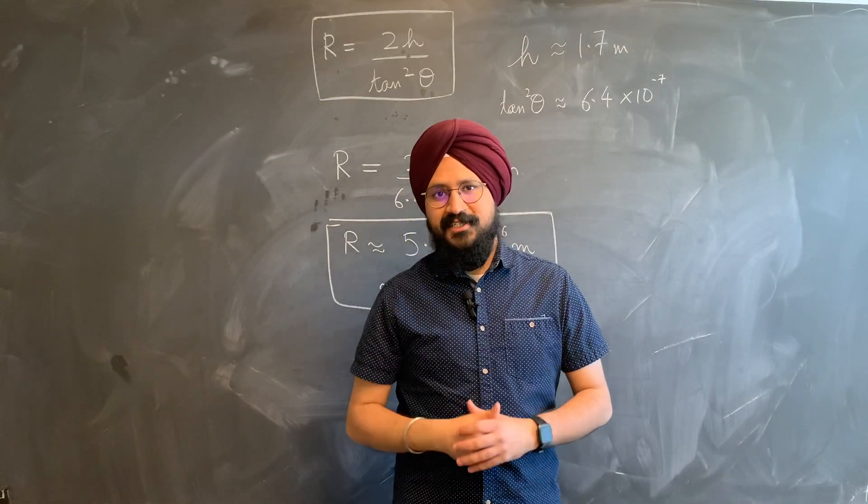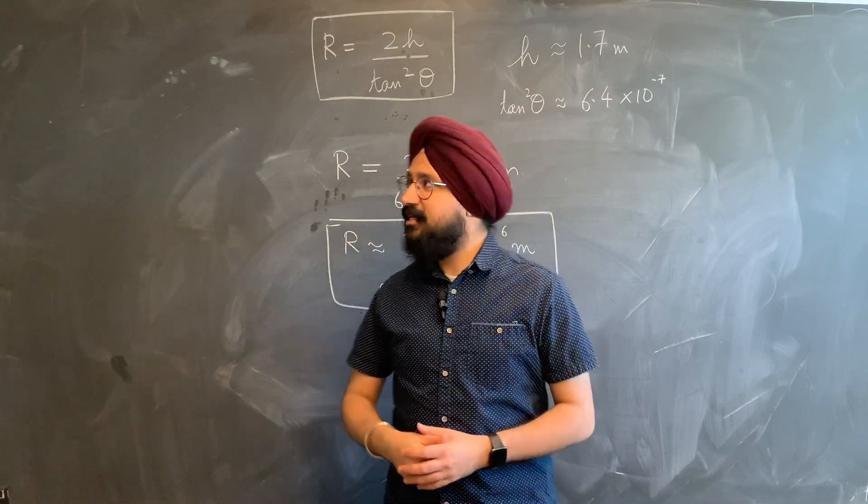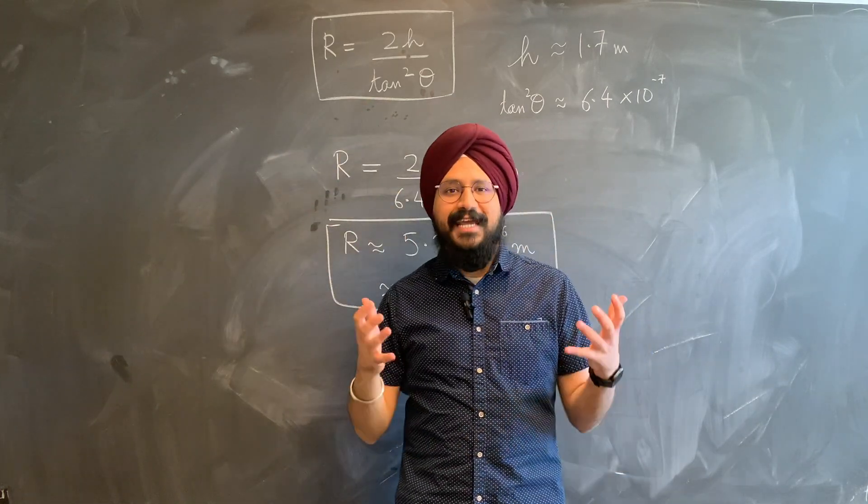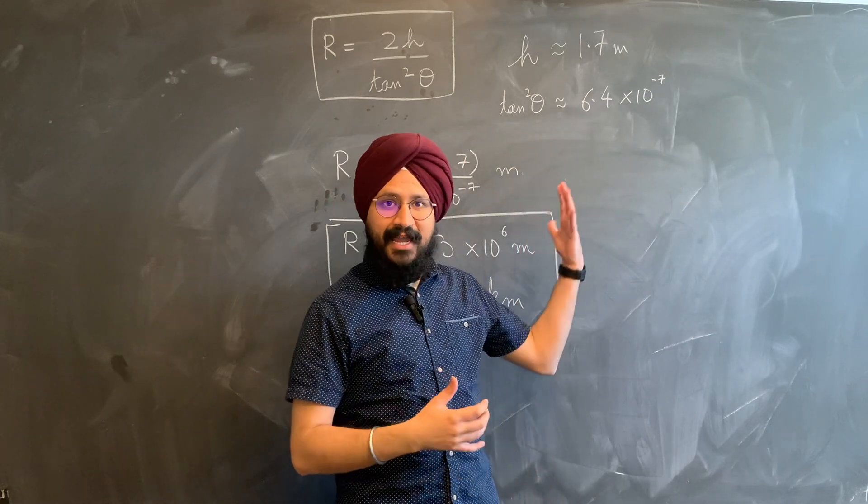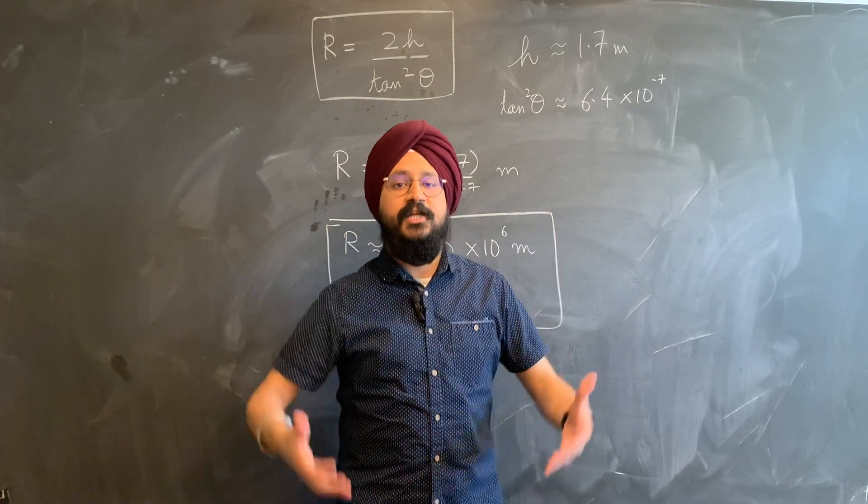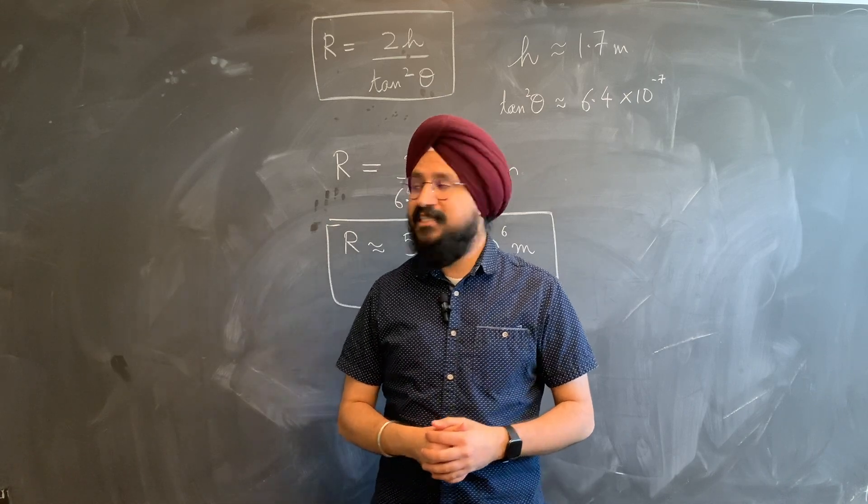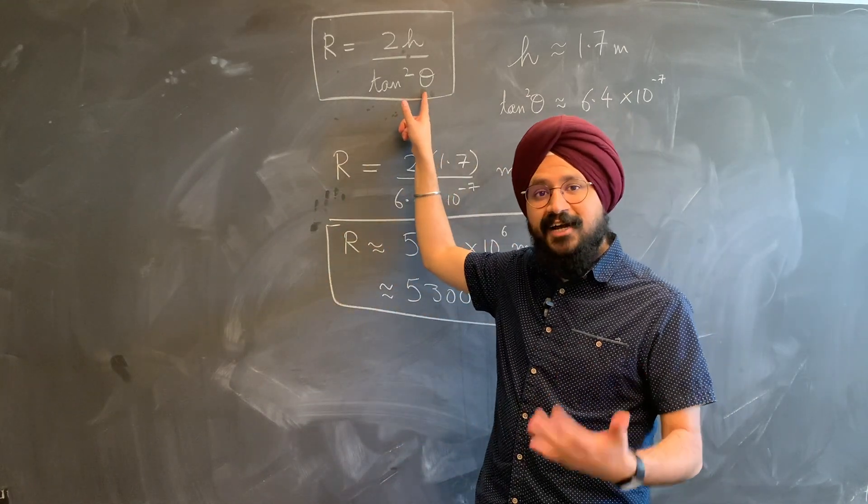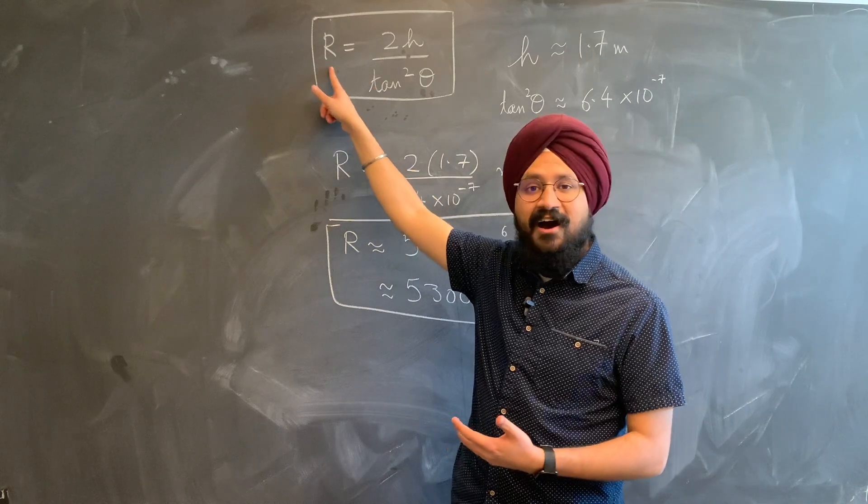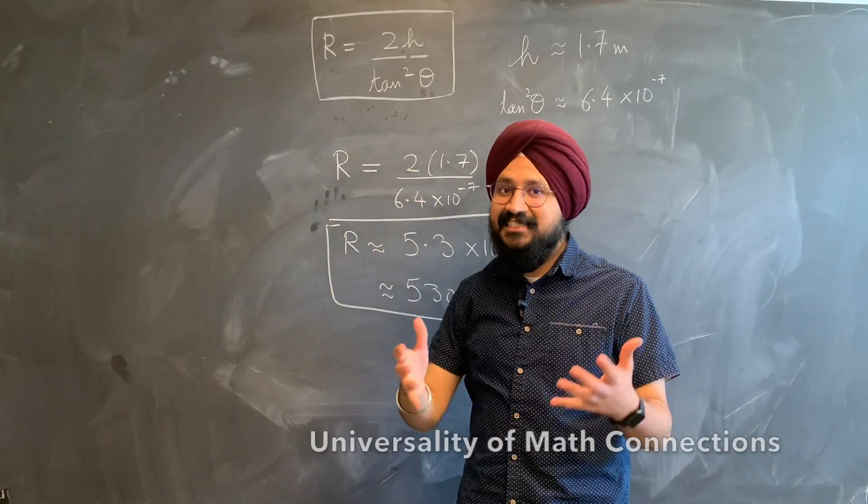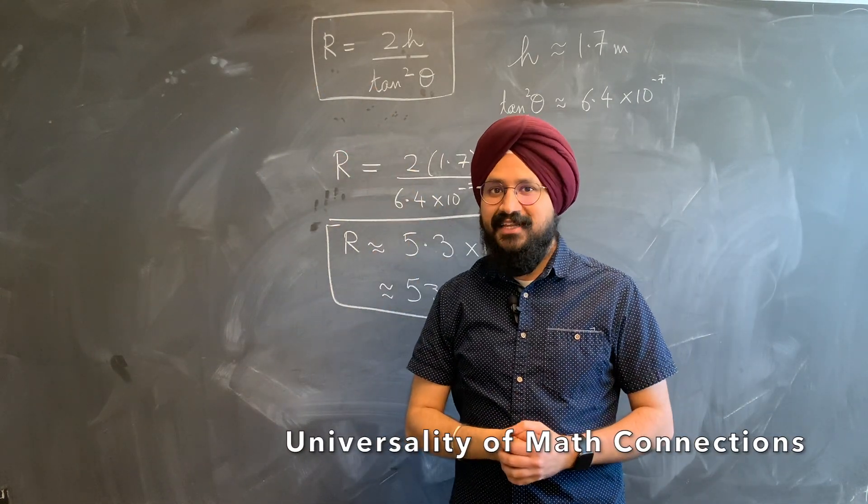There are two important takeaways over here. One, this result works for any height and not just my 1.7 meters. A taller person will see a longer time between the two sunsets and therefore will have a larger angle theta, keeping R fixed. That is the universality of mathematical connections.